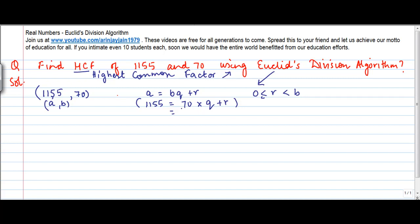Right, we know 70 goes into 1155 roughly, you need to estimate what is the multiple that you will need. I think it's 16.